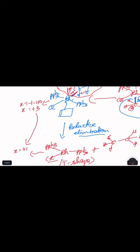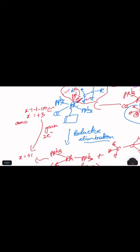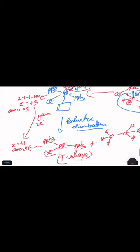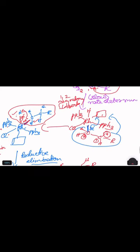So from plus three to plus one, it is of course reduction because two electrons are gained. And you see the coordination number - initially the coordination number is one, two, three, four, five. Five is the coordination number. Here the coordination number will be only three.